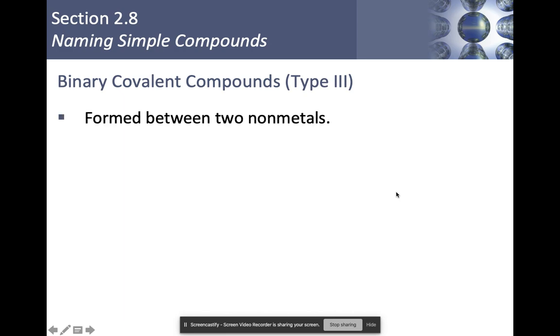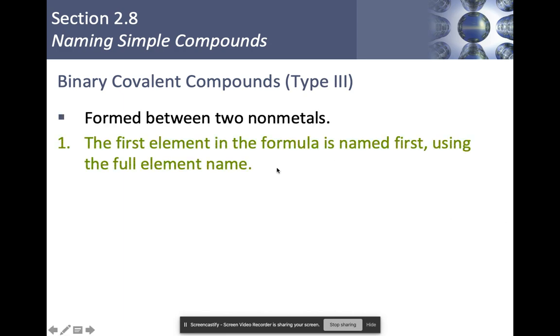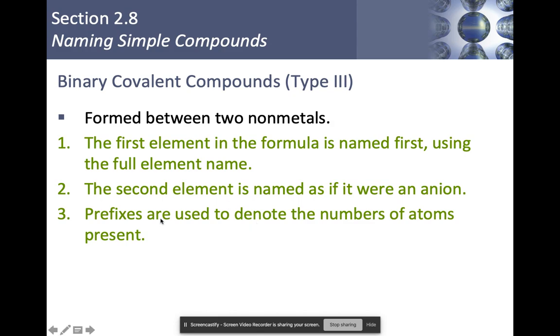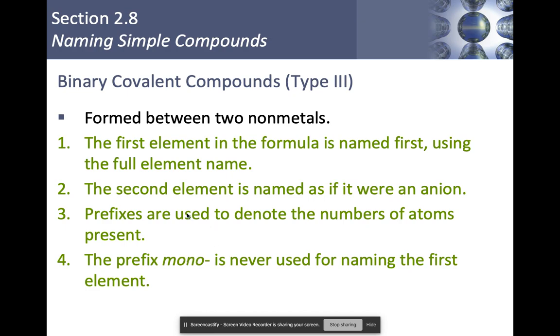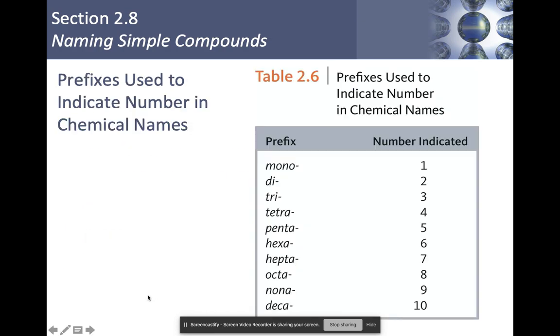Binary covalent compounds. If you have two nonmetals, the first element is named first, and yes, you use the full element's name. The second element is named as if it were an anion, even though it isn't. So we change the ending to '-ide'. We do use prefixes to denote the number of atoms that are present. And the prefix mono, which represents the number 1, is never used for naming the first element on the list.